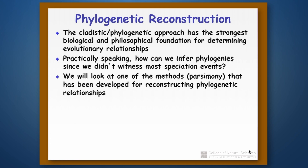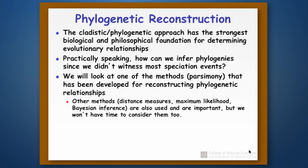Today we're going to look at just one of the methods. It's called parsimony. There are methods besides parsimony — ways of doing things by what we call distance measures, maximum likelihood, and something called Bayesian inference. Those last two are statistical approaches. They're very important, but we don't have time to consider them all, so we're going to focus on parsimony because it's more straightforward.